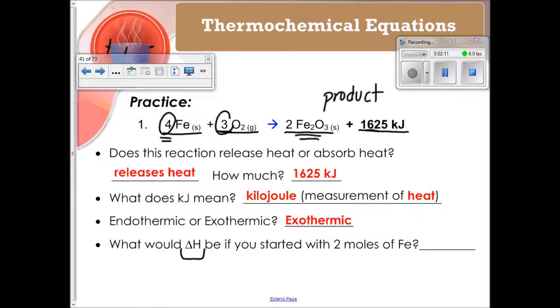So 1625 divided by 2 is going to be equal to, and I have it written down somewhere, 812.5. Boom. There we go.